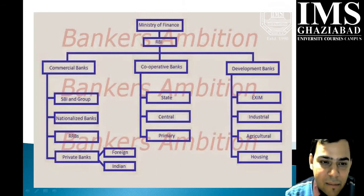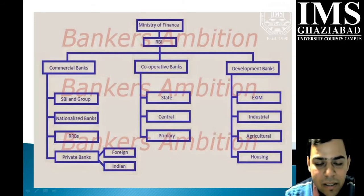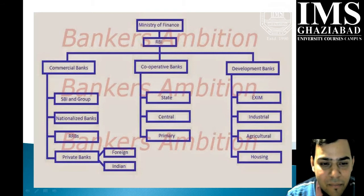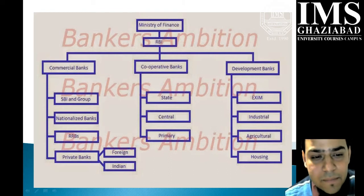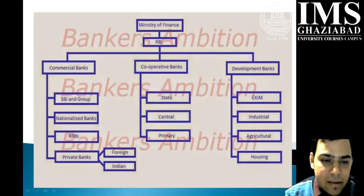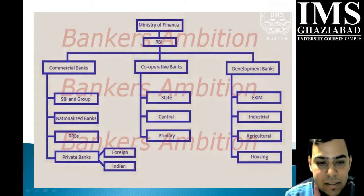If we look at commercial banks, they can be further divided into four categories. First is SBI and its group banks. These group banks are going to soon become part of the State Bank of India, since it is a legacy bank that has been operating in India for the last 200 years. Then nationalized banks come into the picture — for example, Punjab National Bank, Bank of Baroda, Syndicate Bank, Punjab and Sind Bank.